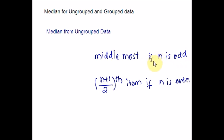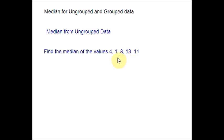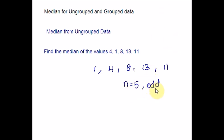n is the total number of data in the given data set. Here is an example with ungrouped data. Step 1: arrange them in ascending order. Step 2: count the number of data given — 1, 2, 3, 4, 5. Five is an odd number. If n is odd, you can figure out the middlemost number. Counting from both sides — 1, 2 and 1, 2 — the middle number is 8. So 8 would be your median.